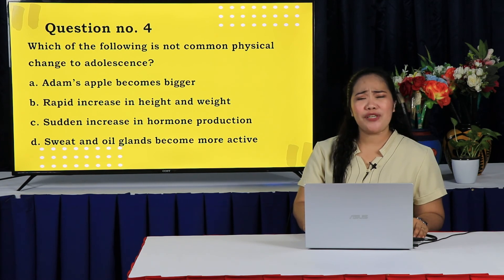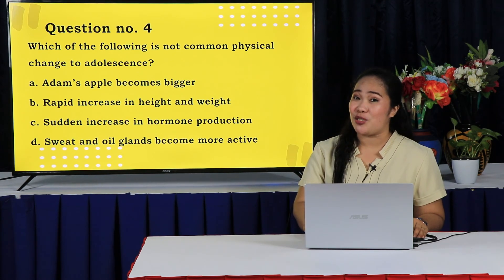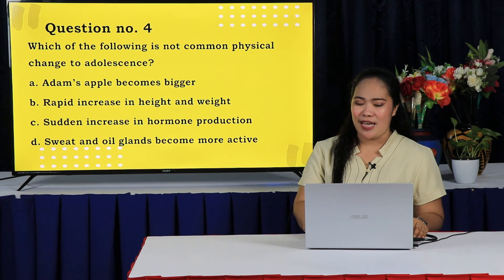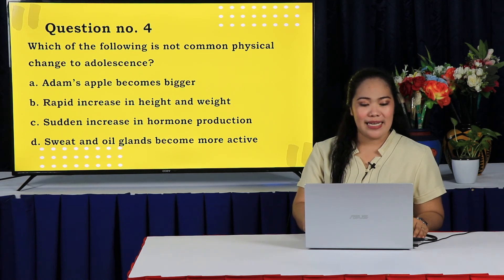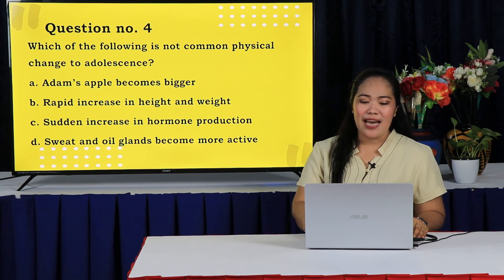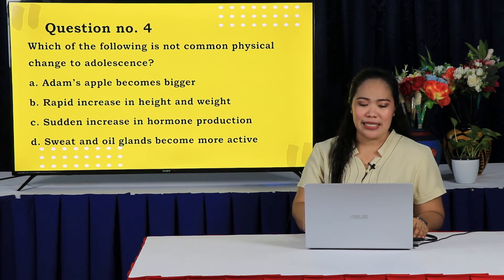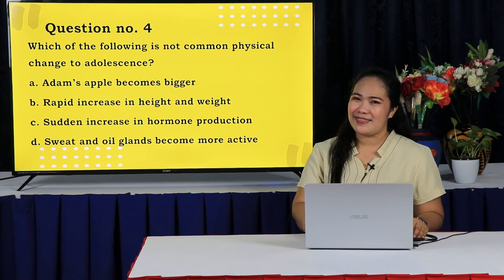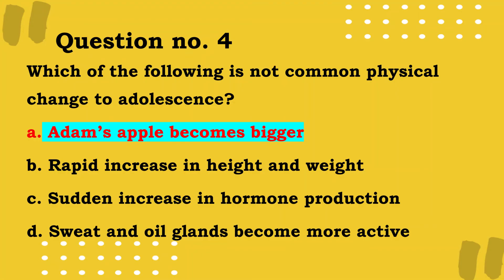Question 4: Which of the following is not a common physical change in adolescence? A. Adam's apple becomes bigger. B. Rapid increase in height and weight. C. Sudden increase in hormone production. D. Sweat and oil glands become more active. The correct answer is Letter A, Adam's apple becomes bigger.